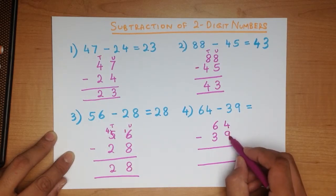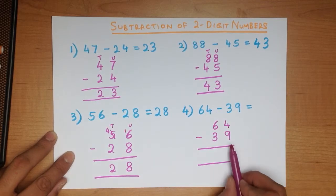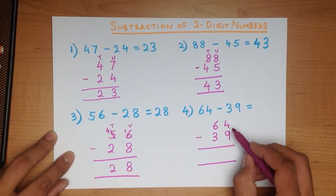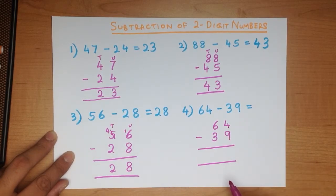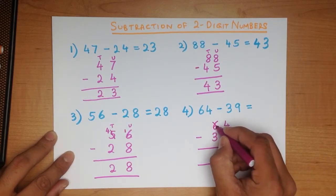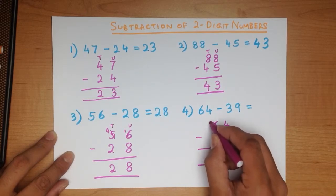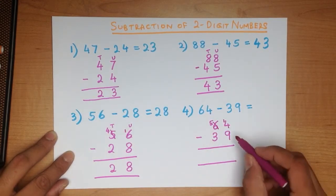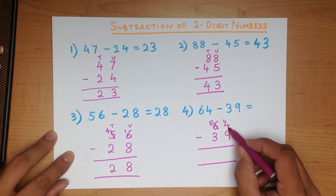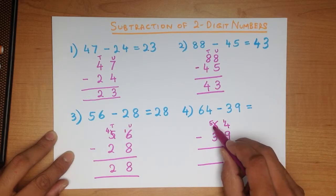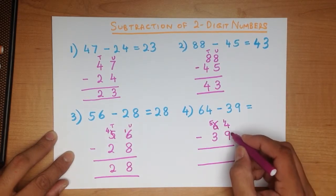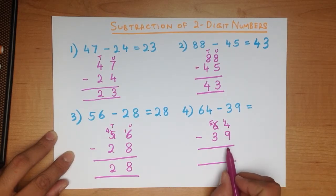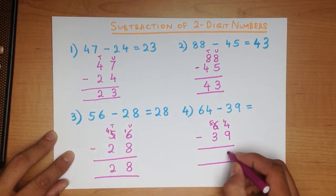What is 4 minus 9? We can't do this, because 4 is smaller than 9. So we have to take a 10 from here. We put a cross next to it and minus it by 1: 6 minus 1 is 5. The 1 goes next to the number on the right. So 4 minus 9 becomes 14 minus 9. That's right, it is 5.